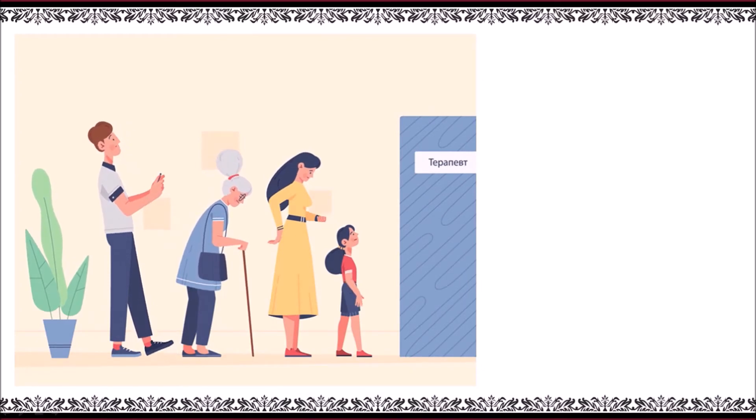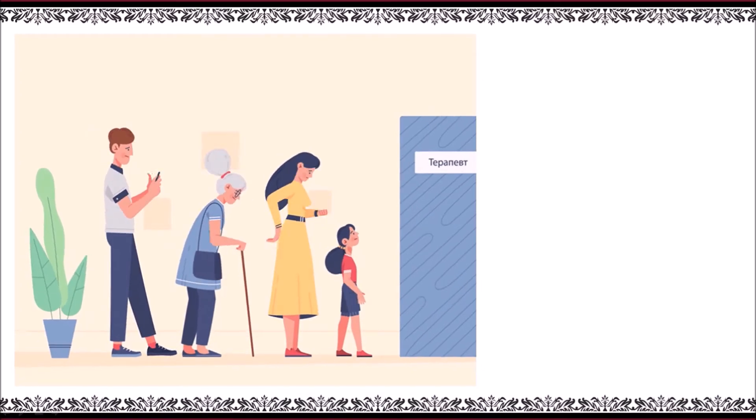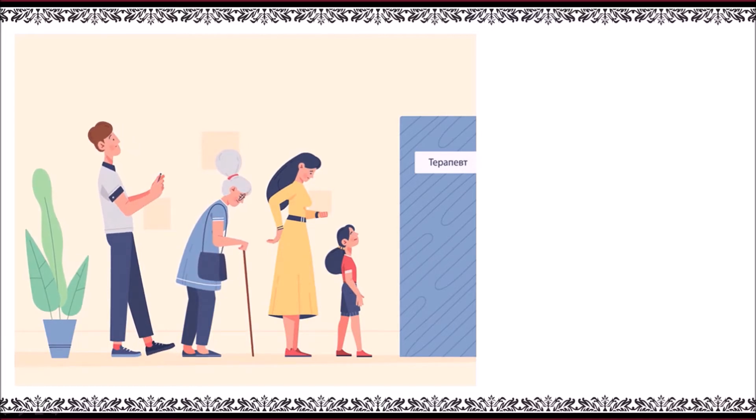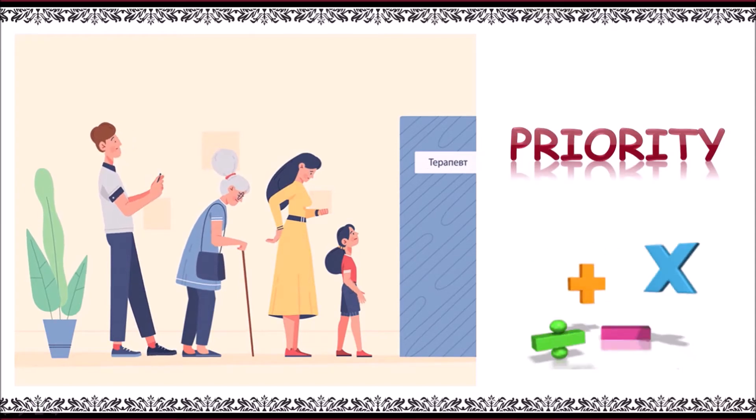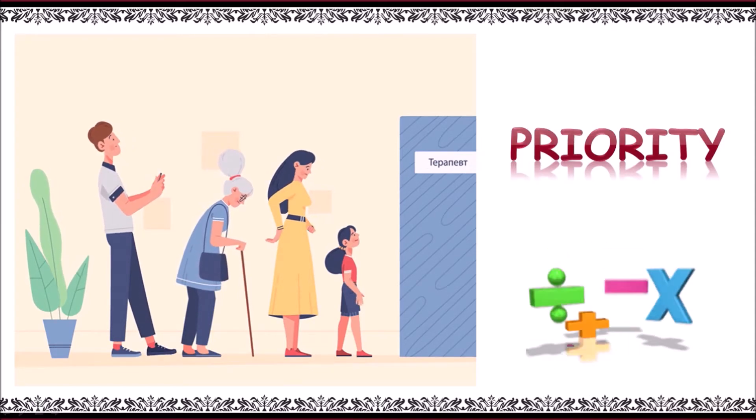Here you can observe a few people in a queue. If we give priority to the old woman out there, she can enter first. This is what we call it as priority.